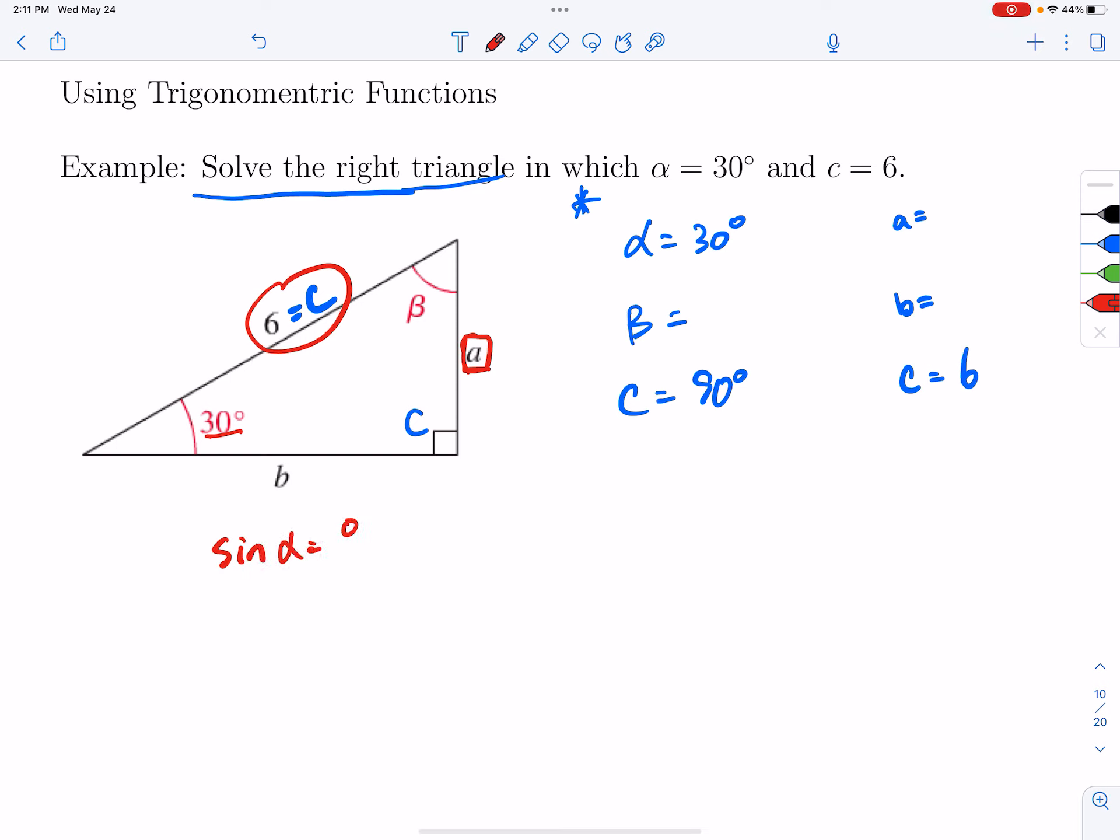Sine of alpha is equal to the opposite over hypotenuse here. So alpha is 30 degrees, so sine of 30 degrees is equal to the opposite, which is a over 6. So to solve this, I'm going to multiply both sides by 6. I have 6 sine of 30 degrees, and that is equal to a.